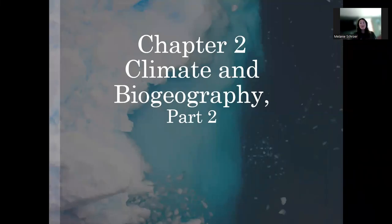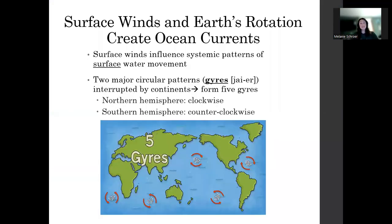Hey everyone! In this video I am going to finish up our discussion on climate and biogeography. In our last lesson we left off talking about global circulation patterns — the easterlies, westerlies, trade winds, and all those different cells: the Hadley, Ferrel, and Polar cells. We can get a pretty good idea of which way the winds are going and whether the air is going to be hot or cold, and today I'm going to elaborate on how that influences weather patterns in terms of precipitation.